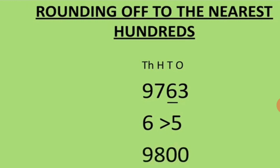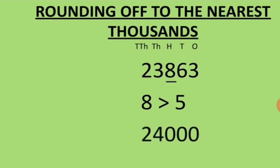Next, we round off to the nearest thousand. Here we have to round off at the thousands place, so we will look at the number to the right of the thousands place. The number is 23,863. At the hundreds place the number is 8, and 8 is greater than 5.